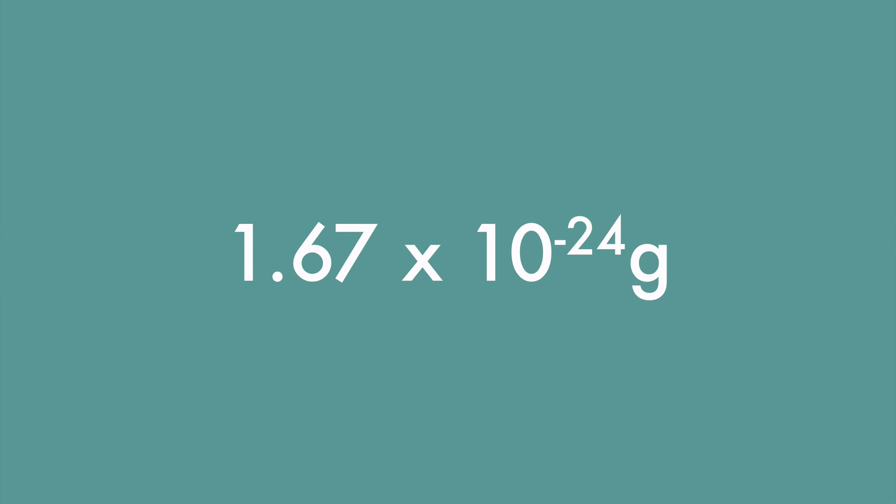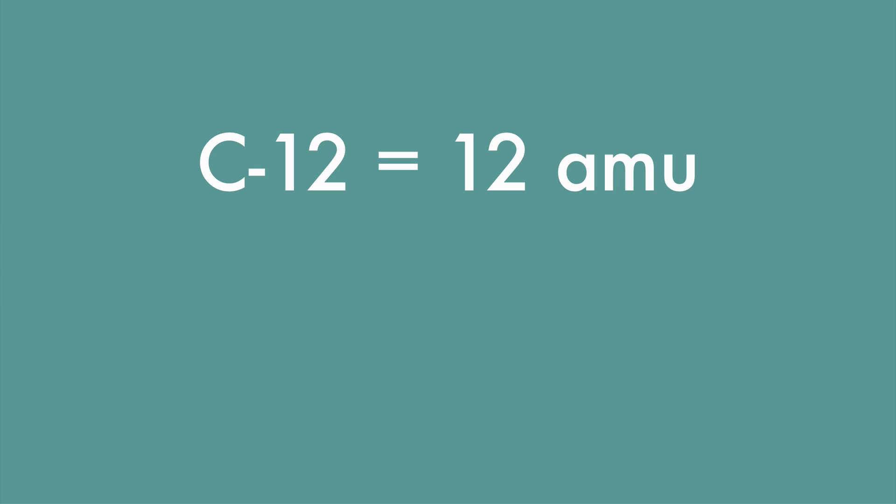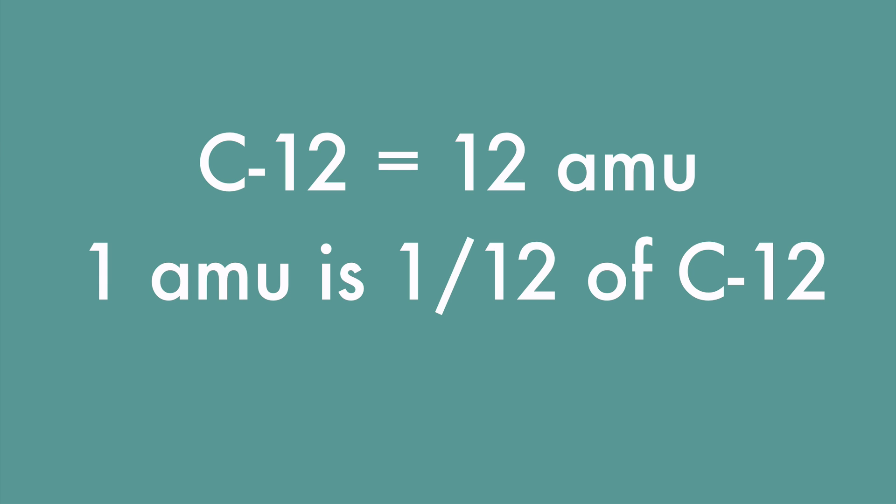The mass of a proton or neutron is incredibly small, only 1.67 times 10 to the negative 24th grams. Numbers like this become difficult to use, so a standard was set based on an atom of carbon-12. The mass of C-12 is 12 atomic mass units, or AMU. Therefore, one atomic mass unit is 1 twelfth the mass of a carbon-12 atom.